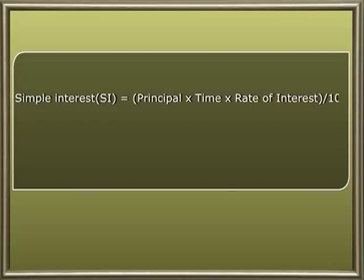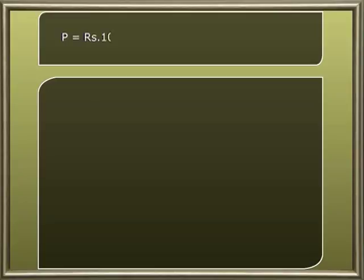Or simply put, PTR divided by hundred. For example, let's say P equals 1000, T equals three and a half years, and R equals six percent. Find the interest. The formula for simple interest is PTR by hundred.